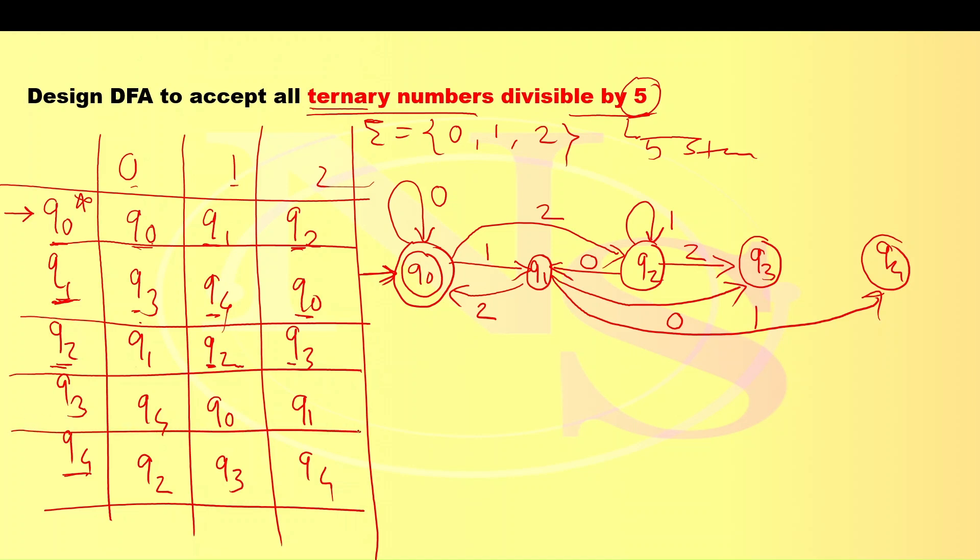Next row. Q3 going to Q4 for symbol 0, Q3 going to Q0 for symbol 1 like this, next Q3 going to Q1 for symbol 2. You can give like this also.